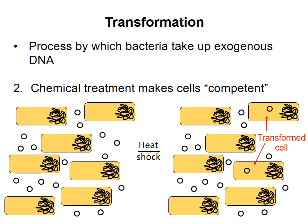The second method involves treating cells with chemicals, often divalent cations such as calcium, to make them competent. The word competent in this context simply means that the cells are capable of taking up foreign DNA. Mixing the cells and plasmid together and then quickly warming up the cells in a heat shock induces some cells to take up the plasmid. Note that in both methods, for the plasmid to remain stable in the bacterium, it must be circular. Linear DNA is degraded by the bacteria.